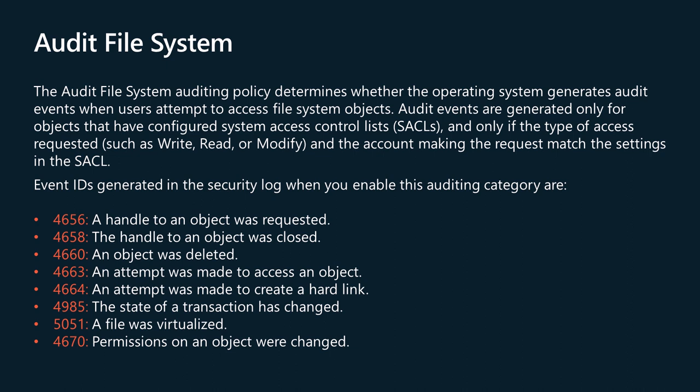This subcategory allows you to audit user attempts to access file system objects, file system object deletion and permissions change operations, and hard link creation actions. Items written to the security event log when this policy is enabled are listed in the documentation and on the screen.